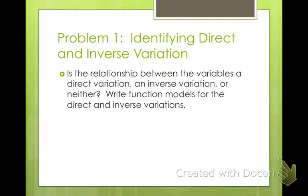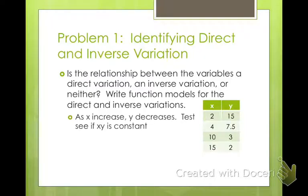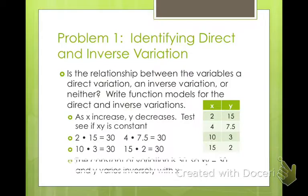So is the relationship between the variables a direct variation, an inverse variation, or neither? And then write a function that models them. So I have my x values are 2, 4, 10, 15, and my y values are 15, 7.5, 3, and 2. So what's happening to x and y? Well, as x is increasing, y appears to be decreasing. Now, to find out if it is a variation, we need to do that x times y equals k. So if we multiply each one of these, they should be the same number. So 2 times 15 is 30, 4 times 7.5 is 30, 10 times 3 is 30, 15 times 2 is 30. Since these are all the same, it is an inverse variation. So you can see that x and y have a constant when you multiply them.